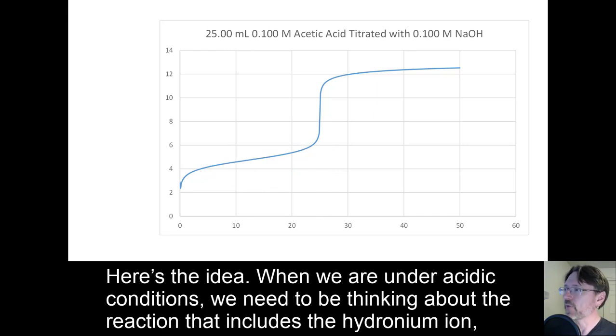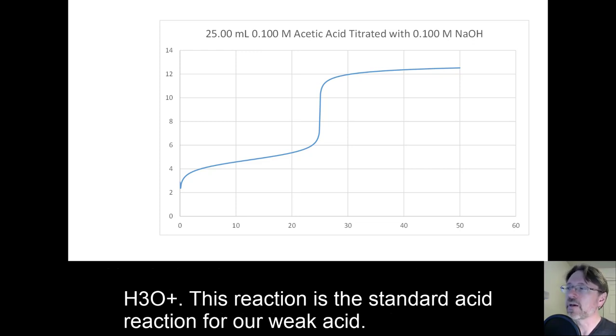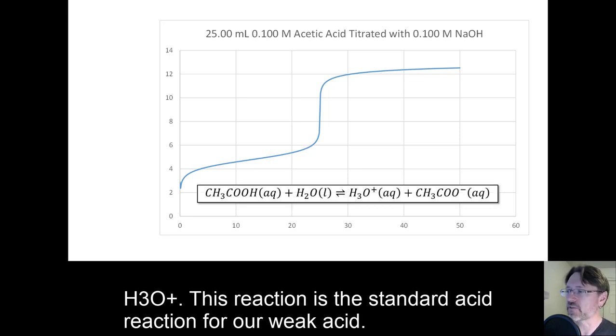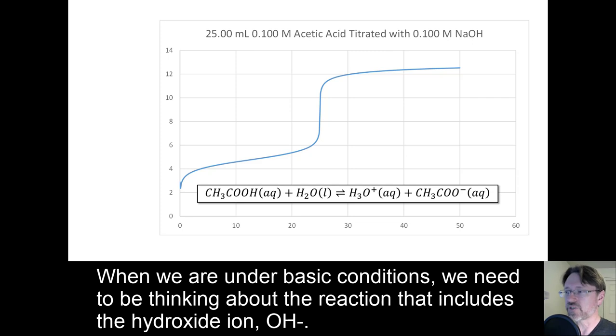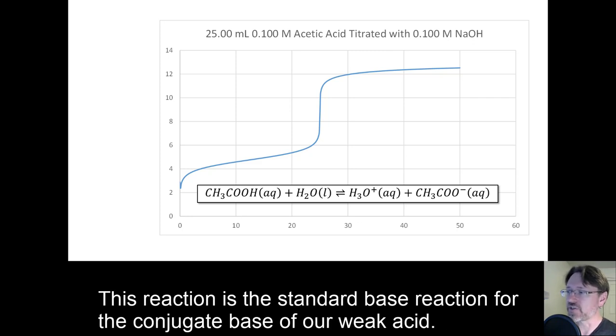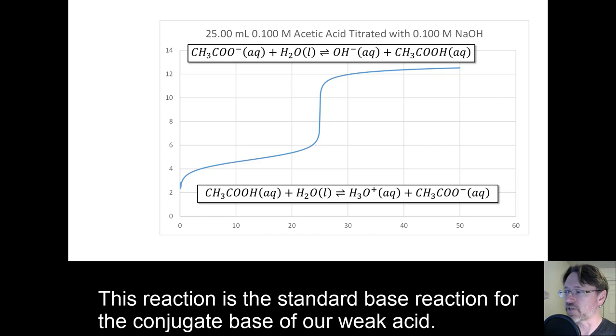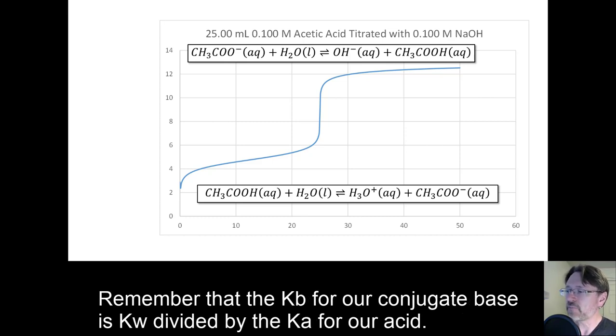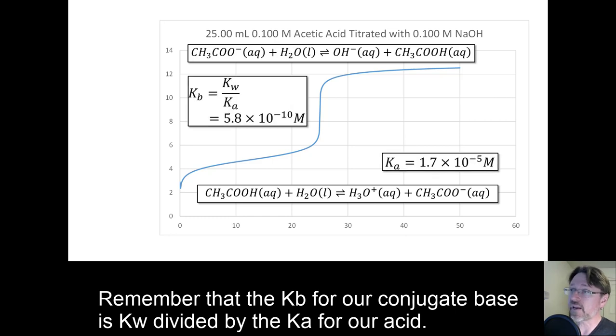Here's the idea. When we are under acidic conditions, we need to be thinking about the reaction that includes the hydronium ion, H3O+. This reaction is the standard acid reaction for our weak acid. When we are under basic conditions, we need to be thinking about the reaction that includes the hydroxide ion, OH-. This reaction is the standard base reaction for our conjugate base of our weak acid. Remember that the Kb for our conjugate base is Kw divided by the Ka for our acid.